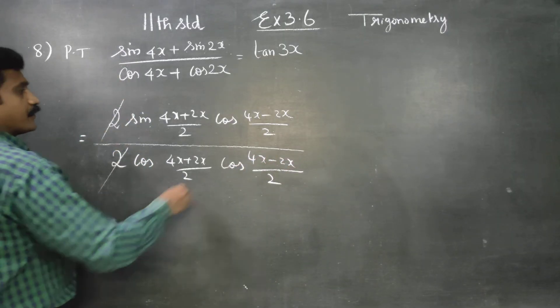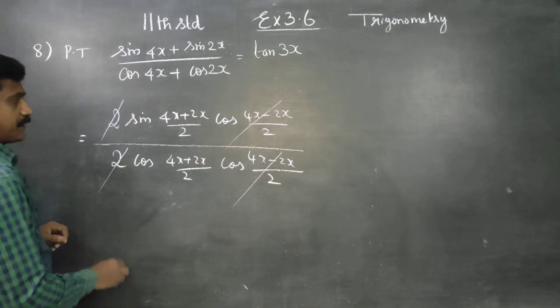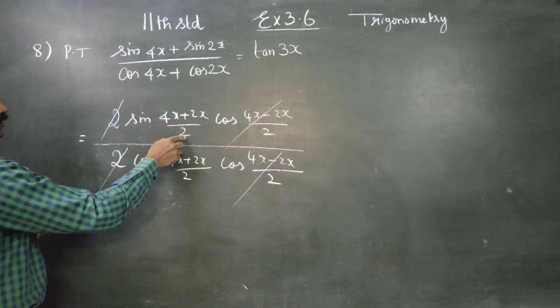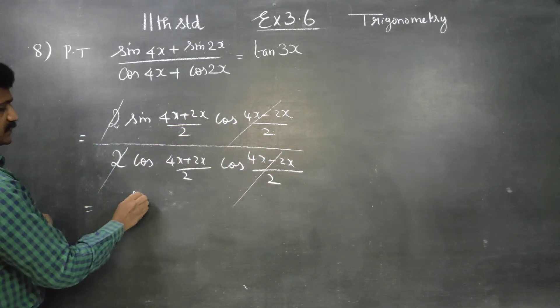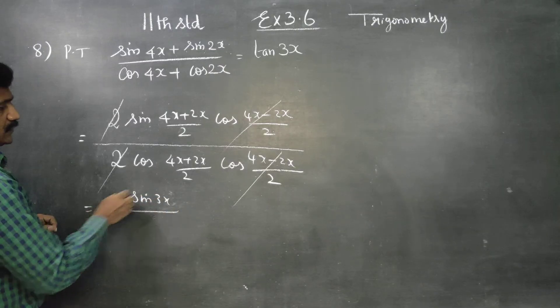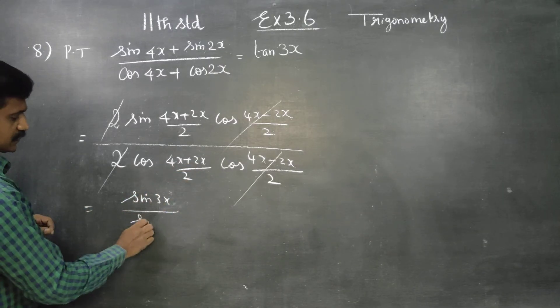The 2 cancels. Determine the terms that cancel. We get 6 by 2, which is 3x, and 6 by 2, which is 3x.